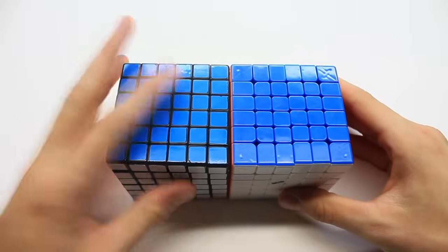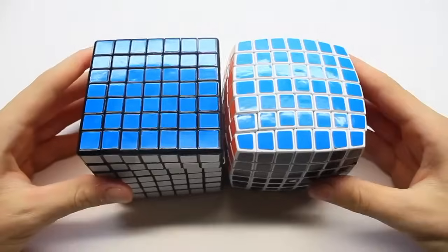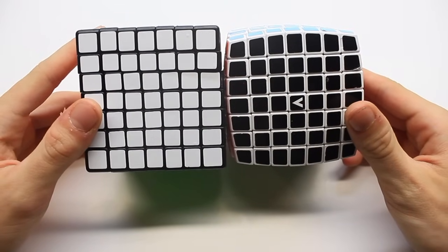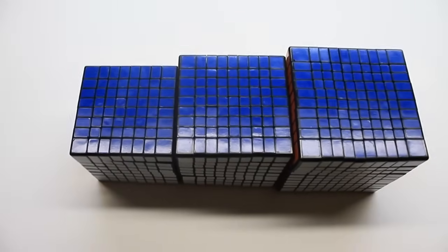For 6x6, it's just the Shang Shao 6x6 and the Qi Yi Wuhua. For 7x7, I have a Shang Shao 7x7 and a V-Cube 7x7. I really need a new 7x7.